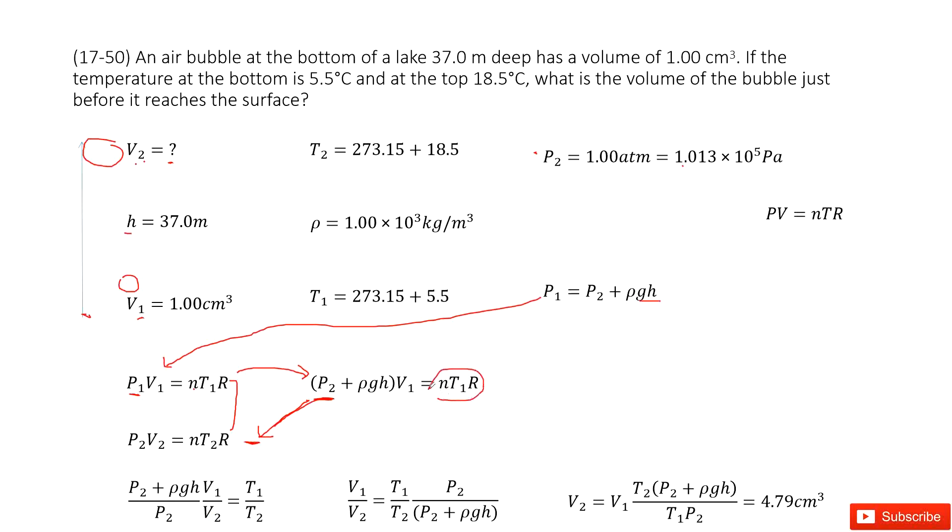Use this term divided by this term. So n cancels, R cancels. We have T1 over T2. From this function, we can easily get V1 over V2 equals T1 over T2 times P2 over P2 plus ρgh.